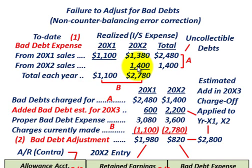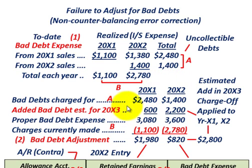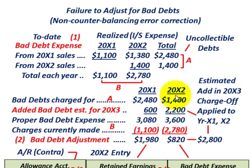At the end of year 20x2, the company is going to have to make some adjustments because in year 20x3 they're going to have some additional bad debt on sales that apply to years 20x1 and 20x2. So they're forecasting an estimated additional bad debt, and we're going to go through the numbers to see how we have to adjust our accounting records for that.